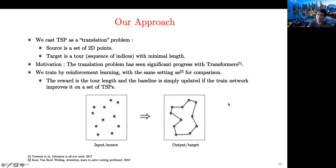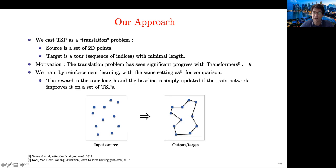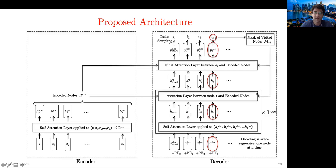Now let's introduce our proposed solution. We cast the TSP problem as a translation problem, where the source language is a set of 2D points and the target language is a tour with minimal length. Transformers have been a powerful architecture in recent years, and we wanted to apply this architecture to combinatorial problems. We train by reinforcement learning with the same setting as Whaleing for comparison. The proposed architecture is composed of an encoder and a decoder.